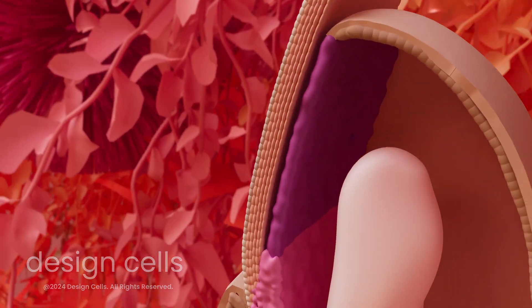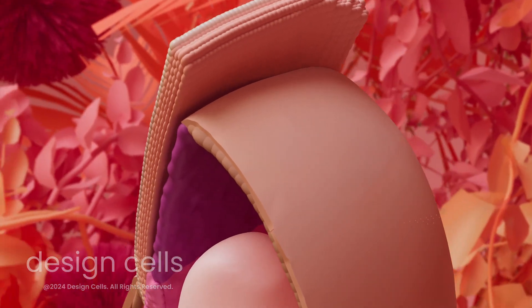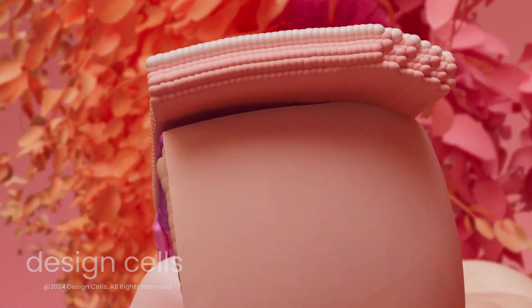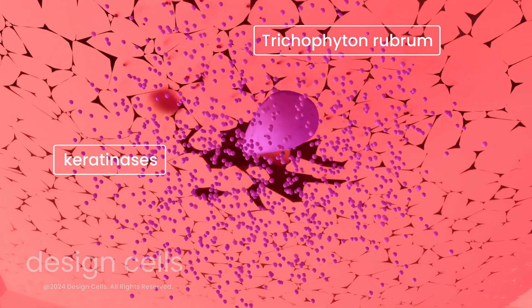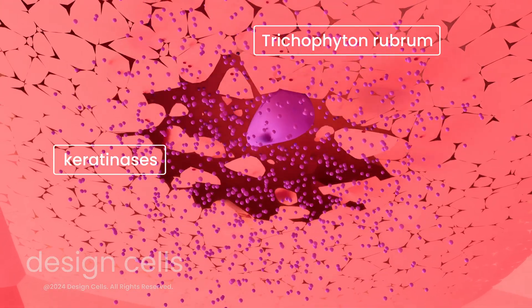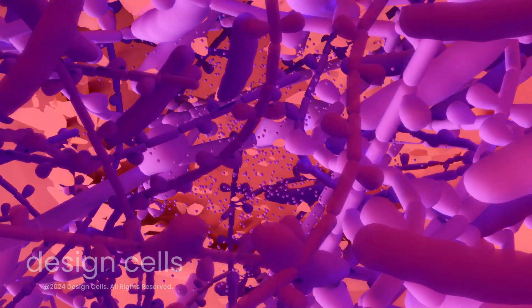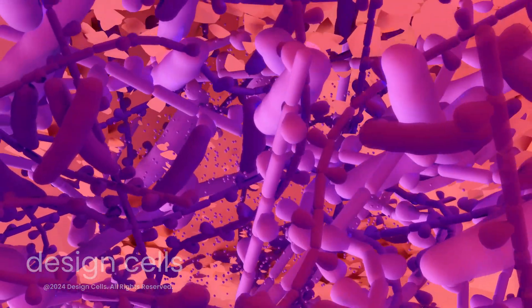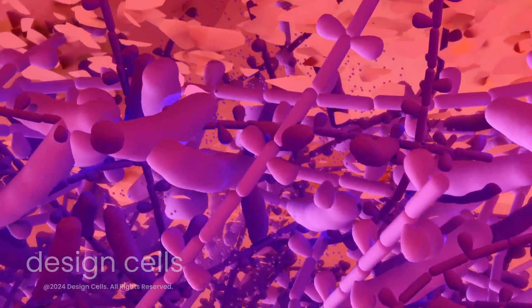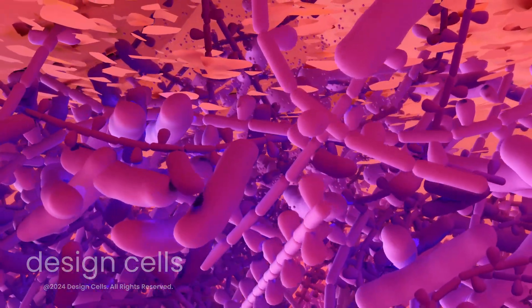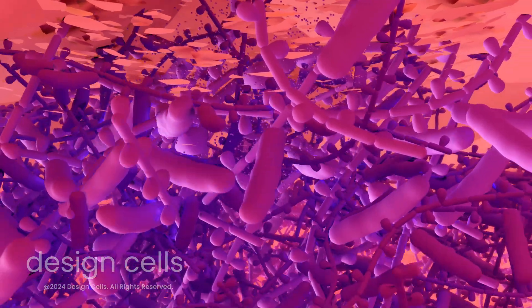Fungi responsible for onychomycosis can penetrate under the nail through direct contact with contaminated surfaces. Fungi like Trichophyton rubrum use enzymes called keratinases to break down keratin, absorbing fragments of this protein as a source of energy for their growth and reproduction. These fungi thrive in a warm and humid environment under the nail, making their eradication complex.